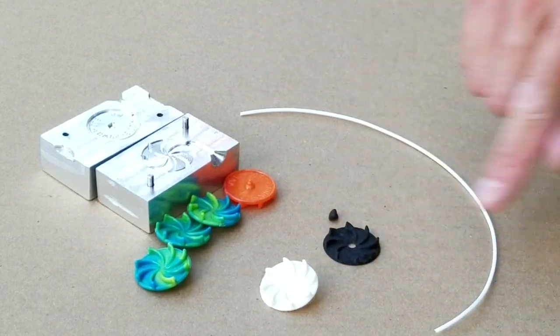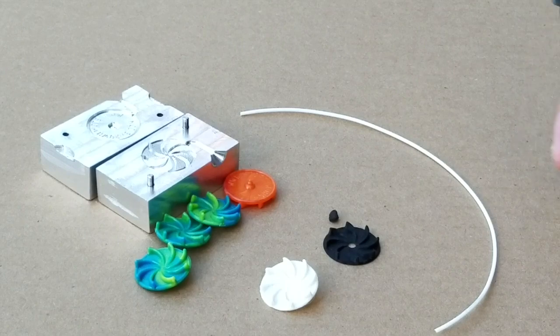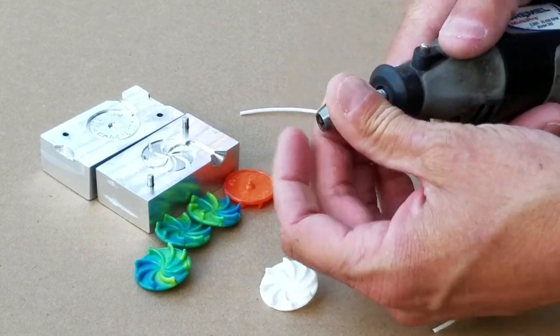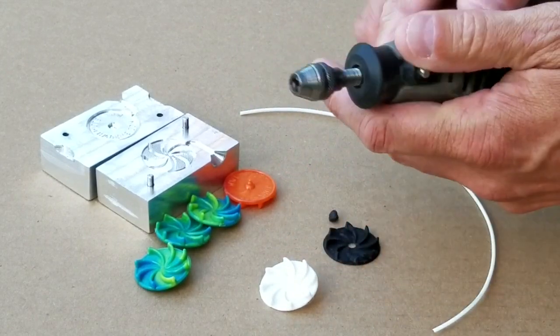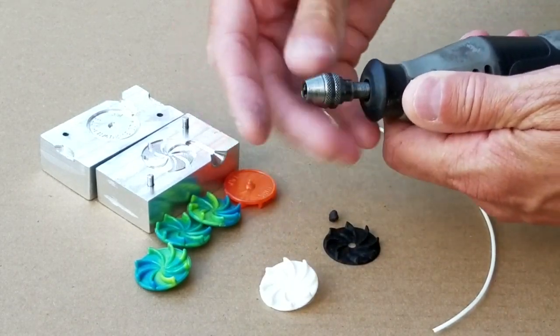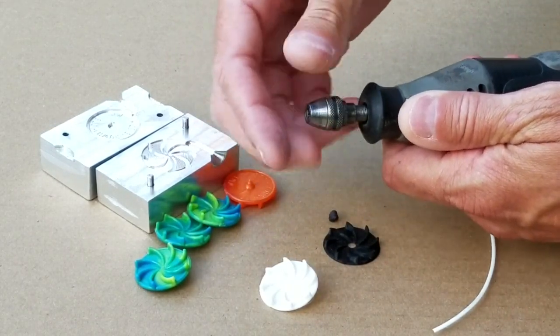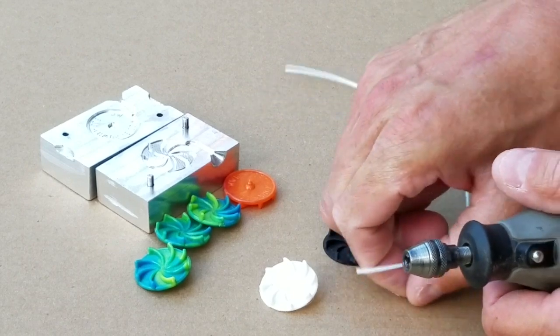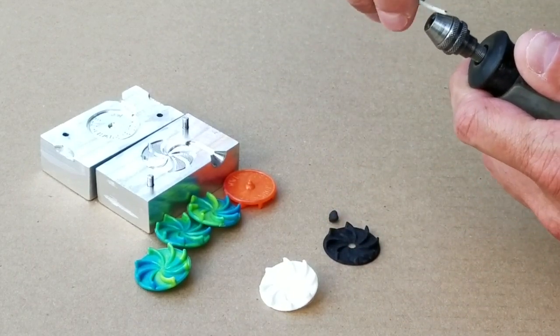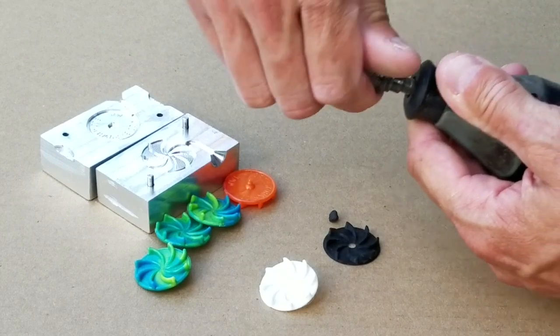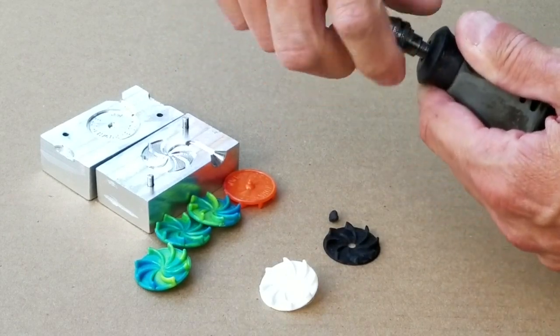So this is one that I printed with the piece that's separate here. The way I attach those is I use my Dremel tool, and I have this three-jaw chuck, kind of like a drill chuck. I put that chuck onto the Dremel, put some filament in there, and tighten it up.